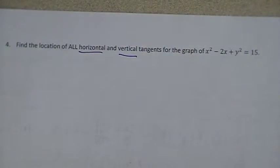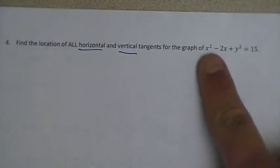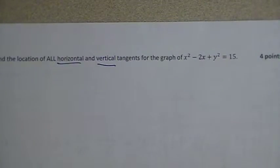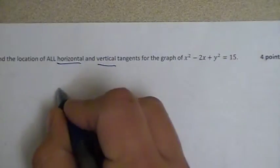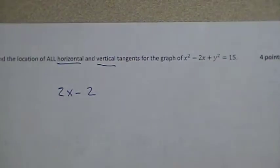Now if you're looking for slopes of tangent lines, you're going to need a derivative. So really the first order of business is to take the derivative of this implicitly. I'm going to take the derivative of x² and get 2x. I'm going to subtract the derivative of 2x and get minus 2.